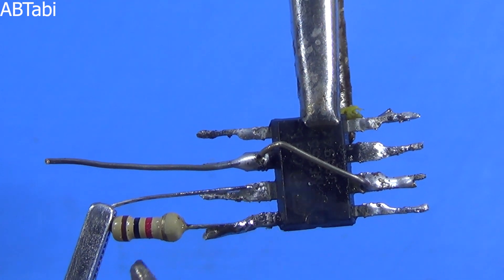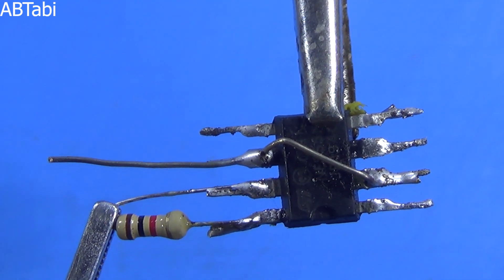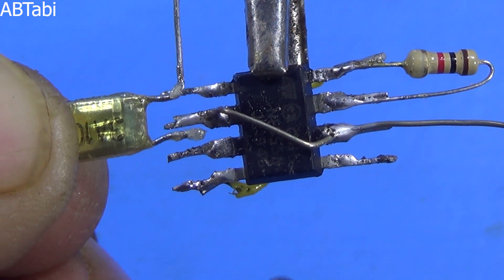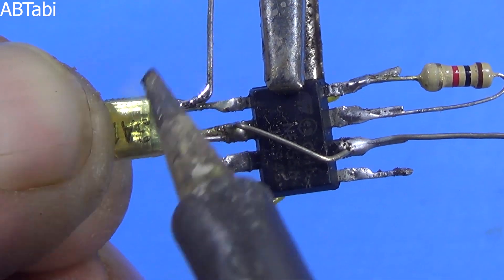1k ohm quarter watt resistor connects with IC pin 7 and 8. 102 paper capacitor connects with IC pin 1 and 2.